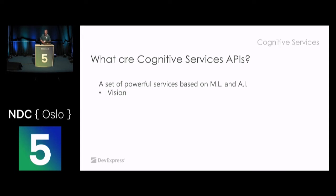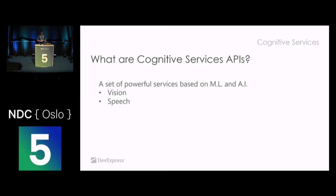One of the services is the Vision API. I checked out a session this morning from the Google guys - they were also talking about the Vision API from Google. All of the big companies have platforms like this - Facebook has something similar, Google is working on it, Amazon has stuff as well, and Microsoft has the Vision API. There is also the Speech API, which works in two ways: text to speech and speech to text. I'll be talking about the last one because that's the most interesting part.